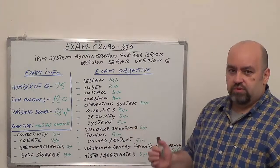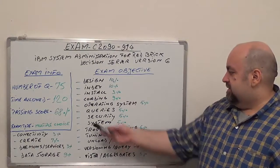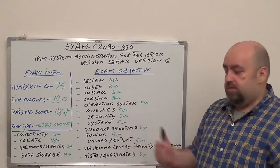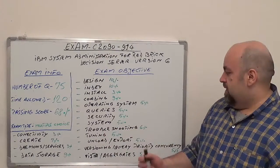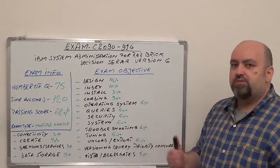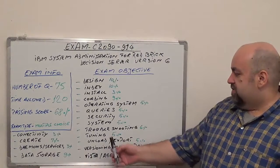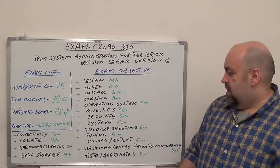Queries, 5% from total questions. Next, security, also 5%. Next, 5% also for the system. Next, we have troubleshooting, 6% from total questions. Next, tuning, 5%.